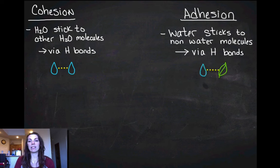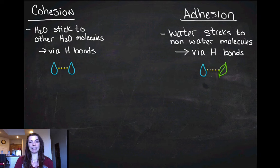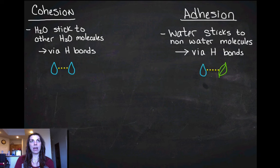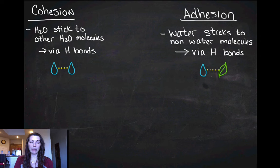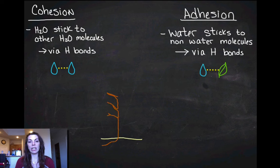In this example, water is adhering to some type of plant molecule that's not water. Cohesion and adhesion are super important in biology — there are literally dozens of times we'll talk about this. The one I want to focus on most in the next couple of weeks is transpiration in plants.